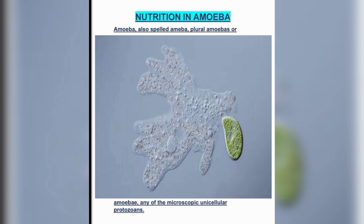Amoeba is found in fresh water bodies such as ponds and lakes, where it floats on the surface. It is a microscopic, irregular-shaped unicellular organism belonging to the Protista kingdom. Its mode of nutrition is holozoic, and it reproduces asexually by binary fission.